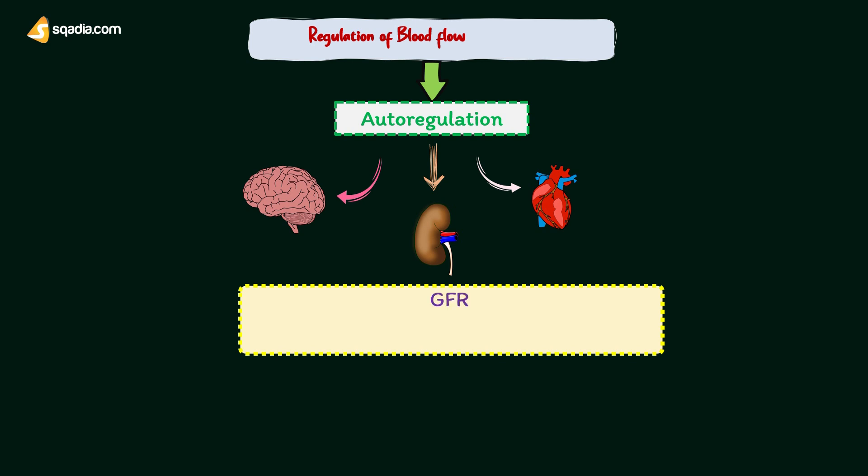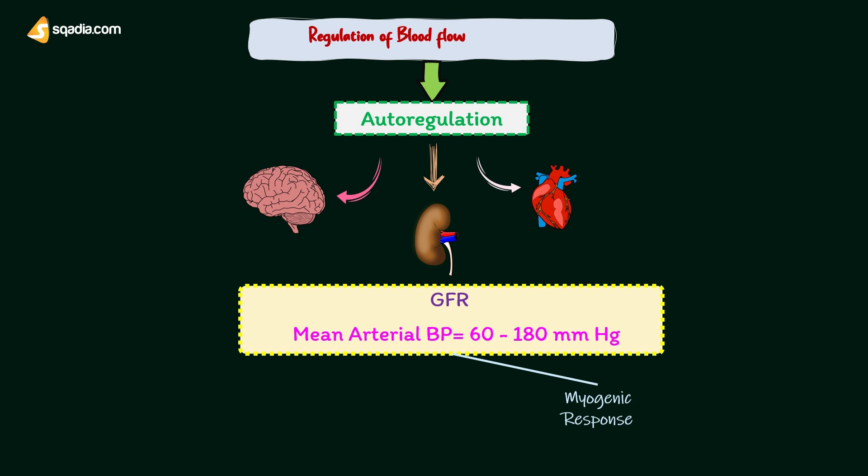The glomerular filtration rate is defined as the volume of filtrate formed every minute by the activities of the 2,000,000 glomeruli in the kidney. Blood flow to the kidneys remains normal even when the mean arterial blood pressure varies widely between 60 mmHg and 180 mmHg. This helps to maintain normal GFR.